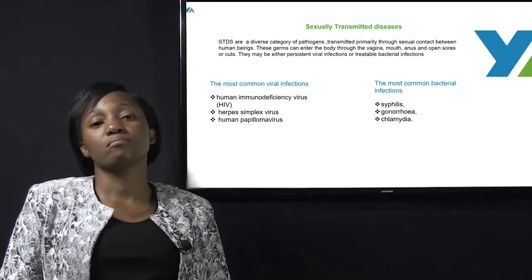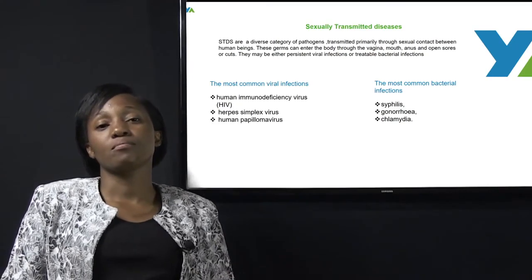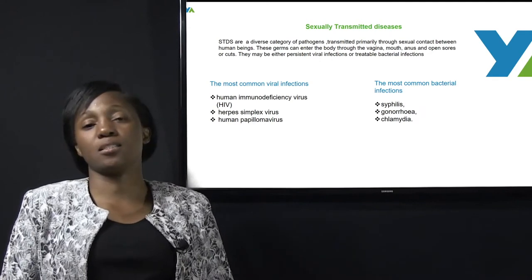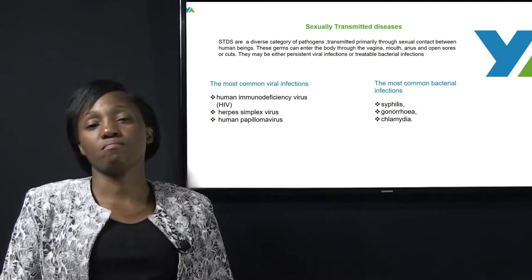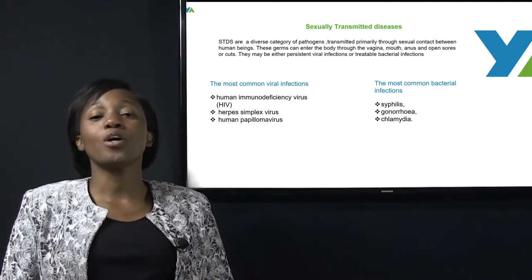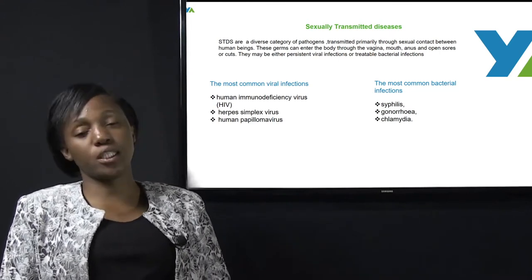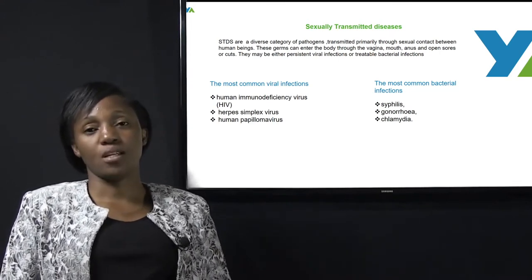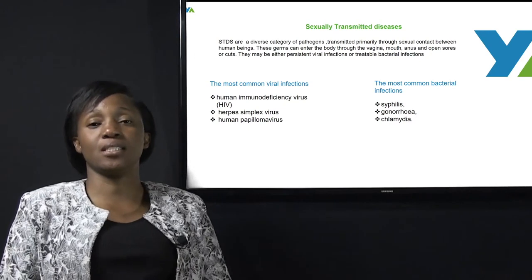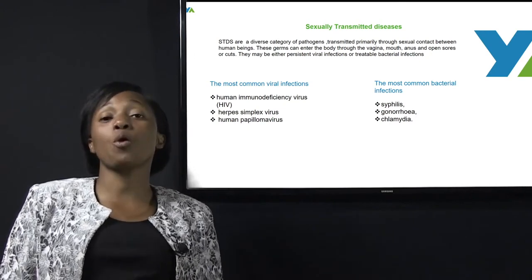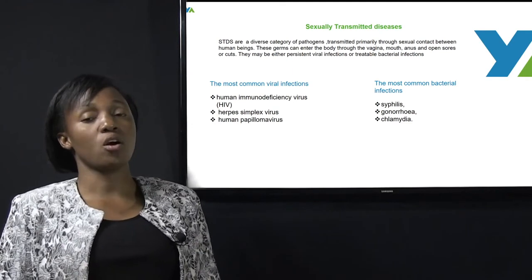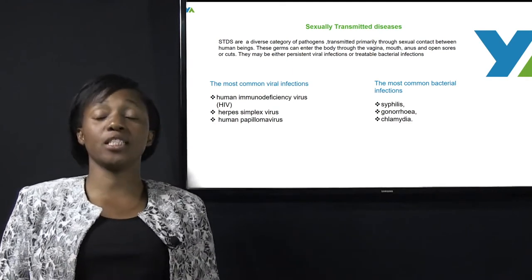Welcome back. We now want to look at sexually transmitted diseases. These are diseases that are spread through having sex with an infected person. There are different types of sexually transmitted diseases. Some can be viral, which are persistent, and some can be bacterial, which can be easily treated.